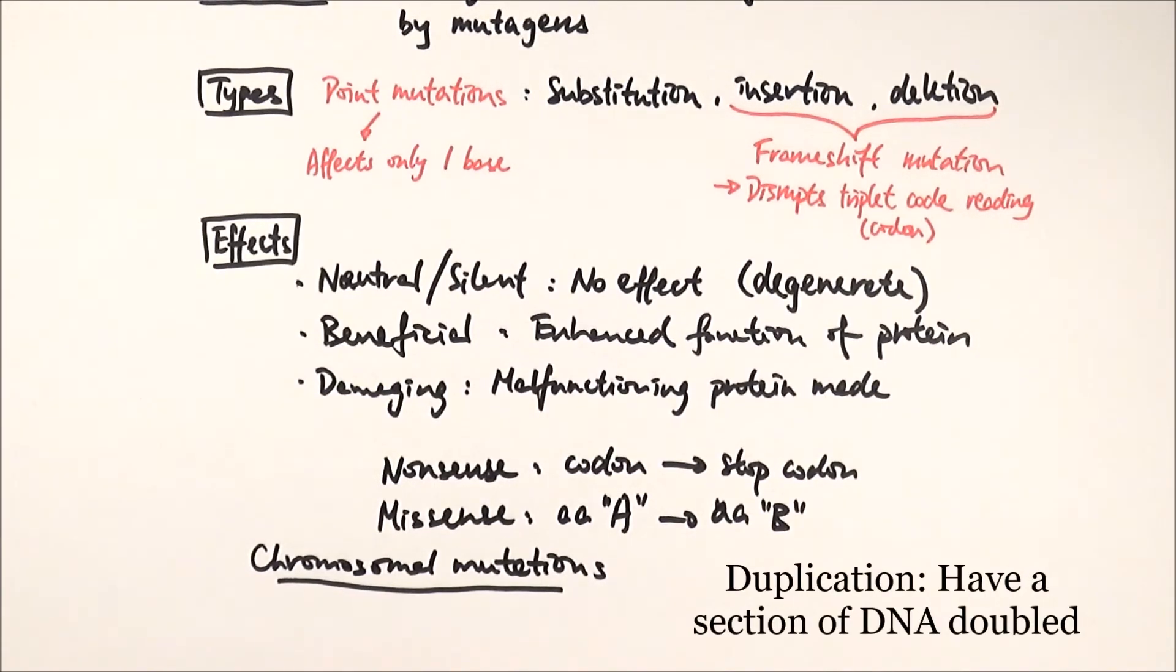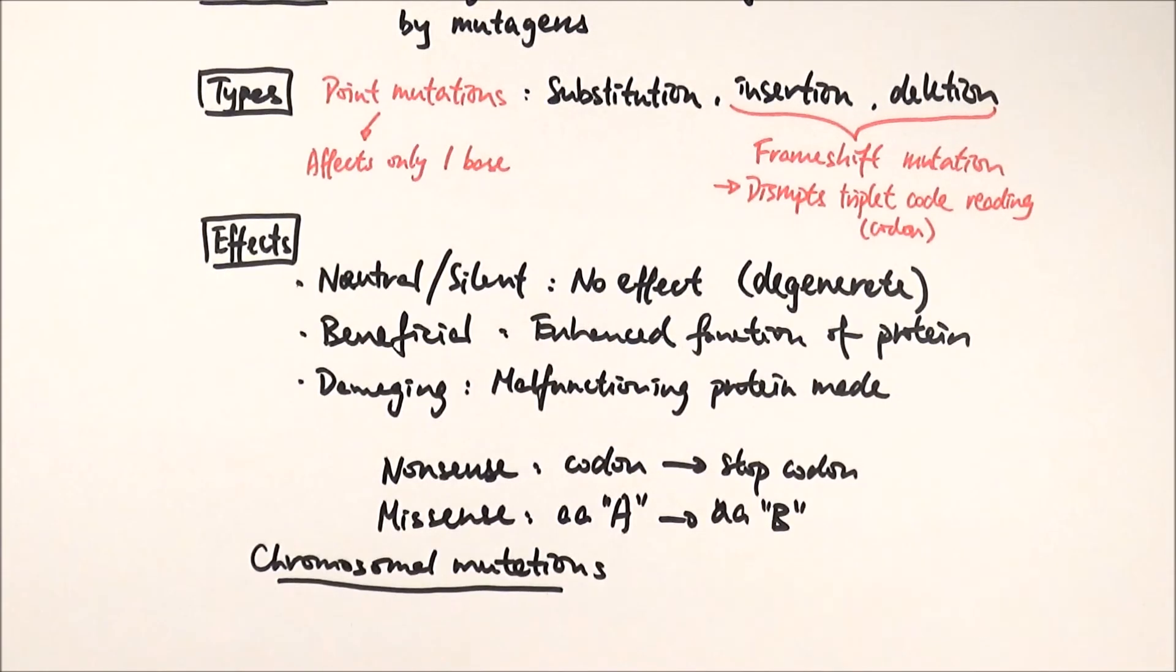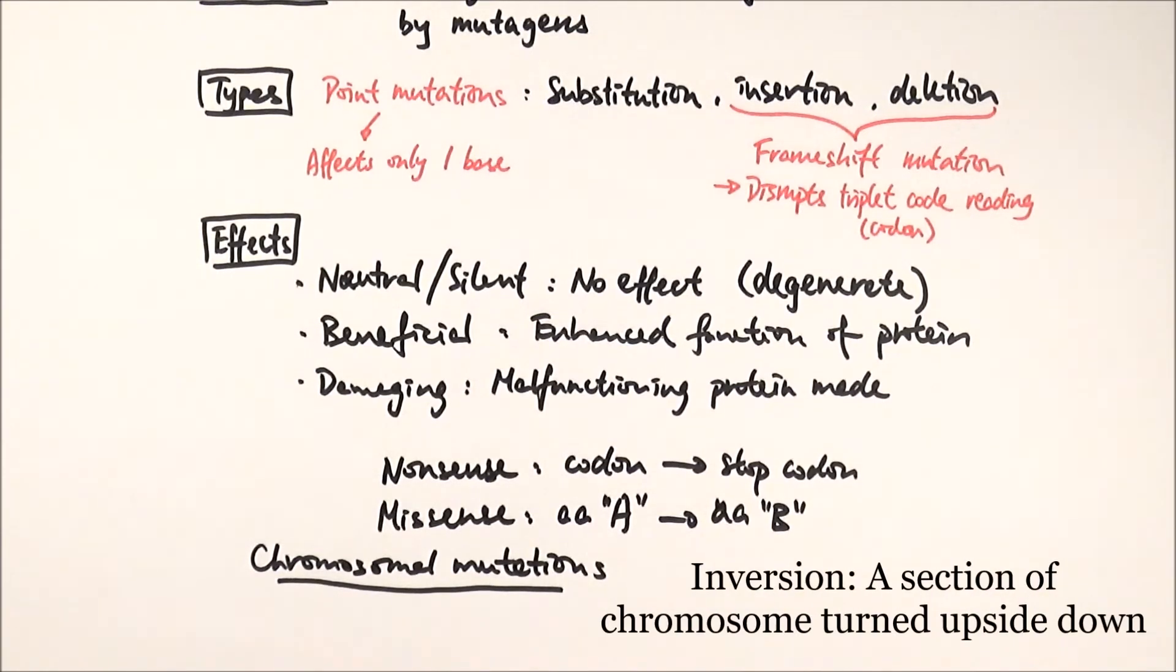Or duplication, where you got part of a chromosome doubled. Inversion, where part of a chromosome has detached itself and then turned itself upside down and then reattached back to the same place.